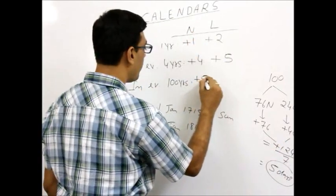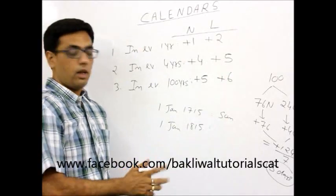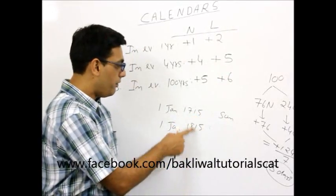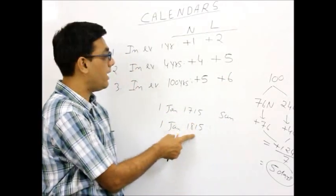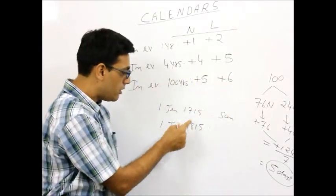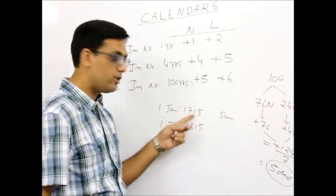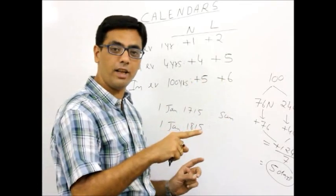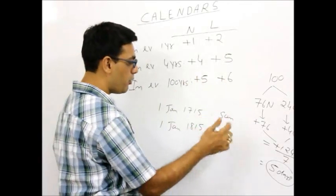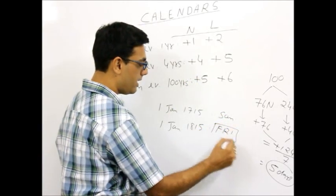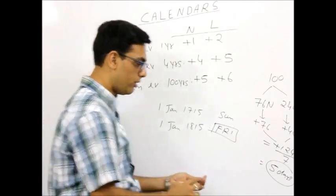So coming back to an example: if 1st of January 1715 is Sunday, what is 1st of January 1815? That is exact 100 years — check which century you are crossing. The century coming in the path is 1800. Was 1800 a leap year? No, it was a normal year. So the rule is plus 5, and therefore the answer is Friday.